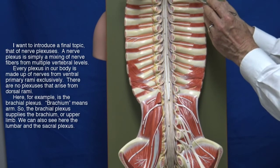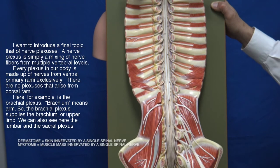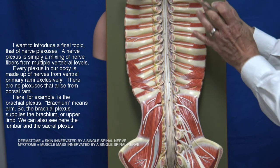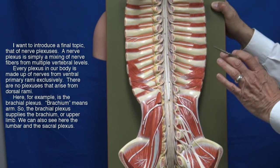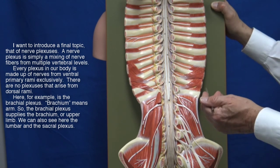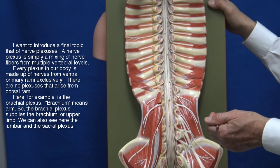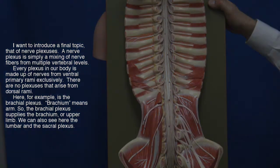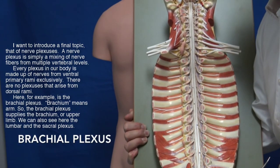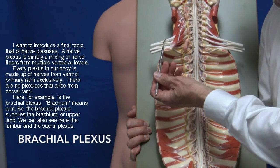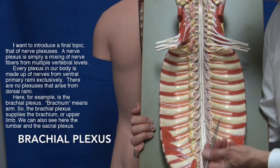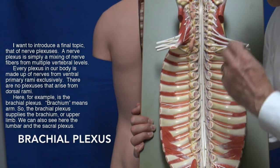I want to introduce a final topic: nerve plexuses. A nerve plexus is simply a mixing of nerve fibers from multiple vertebral levels. Every plexus in our body is made up of nerves from ventral primary rami exclusively — there are no plexuses that arise from dorsal rami. Here, for example, is the brachial plexus. Brachium means arm, so the brachial plexus supplies the brachium, or upper limb. We can also see here the lumbar and the sacral plexus.